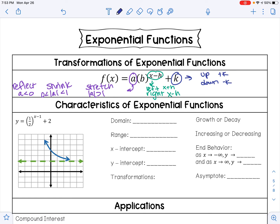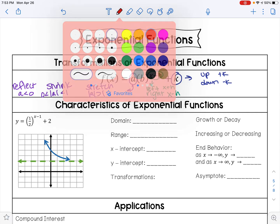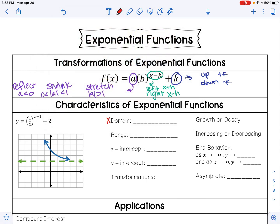They want us to find the domain. The domain are your x values from left to right. Our graph is going to the left forever, so that's negative infinity, and our graph is going to the right forever, so that's positive infinity. Our domain is from negative infinity to positive infinity, which is the same thing as all real numbers.